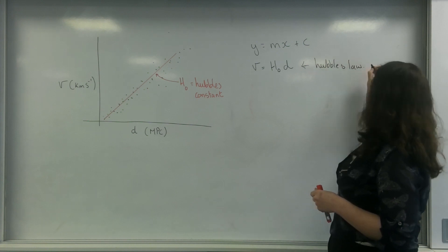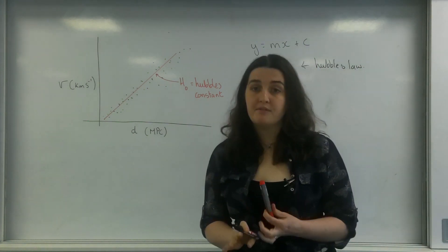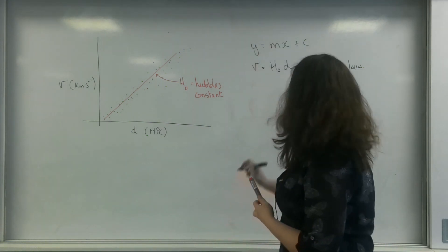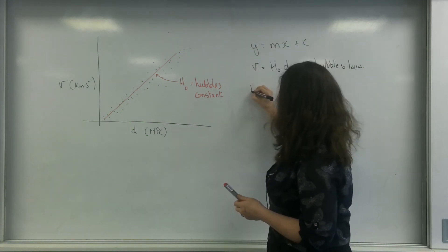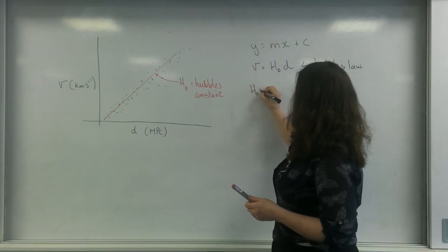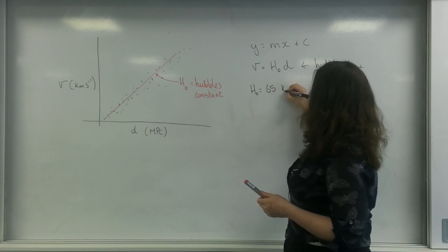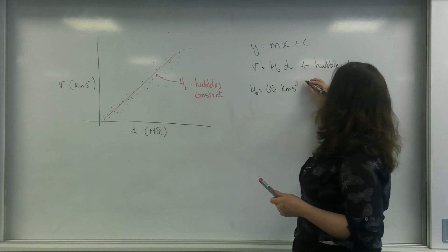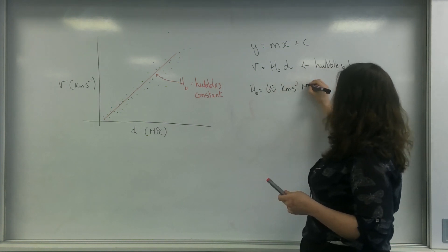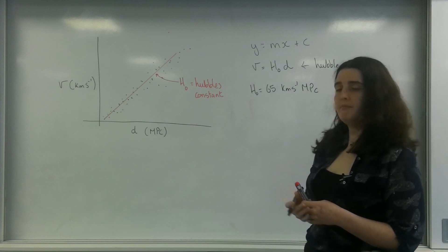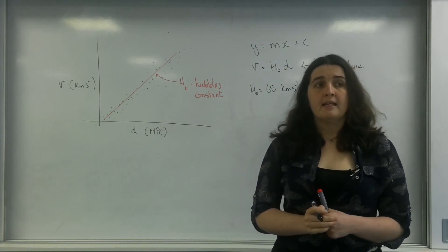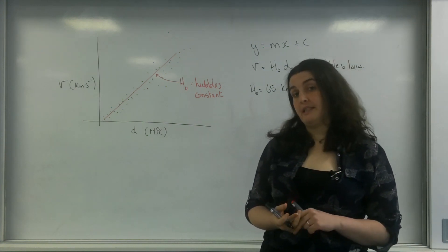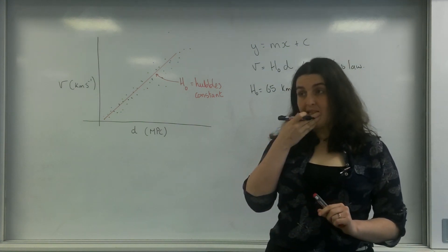Currently the accepted value for Hubble's constant is around 65 kilometres per second per megaparsec. That is the accepted value for this line.